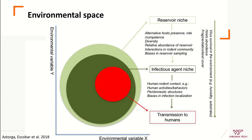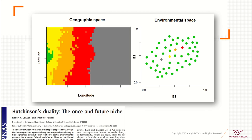Ecological niche modeling is developed in an environmental space where we use environmental variables to assess where species occur or don't occur, so we can make inferences about their tolerances, which we then interpret as an ecological niche. Here I want to present the theory of Hutchinson's duality.